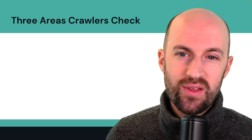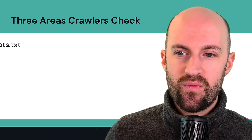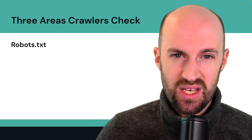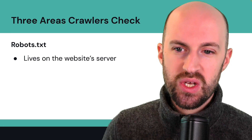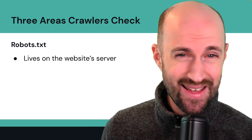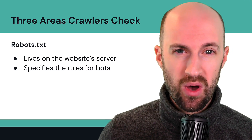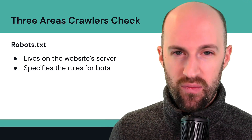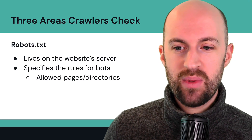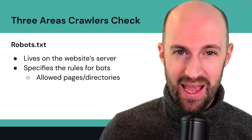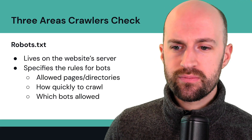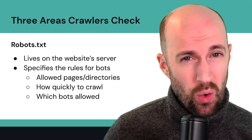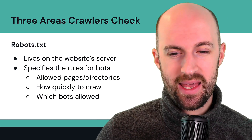Three areas that crawlers actually check on a site. First, they'll go to the robots.txt file. This is a file that should be on every website — it lives on the web server and is a plain text file. It specifies the rules for the bot: what they can do, what they can't do, how often they can do it. It shows the allowed pages and directories they can crawl through, how quickly they can crawl, which bots are specifically allowed, and what pages and directories they can't touch.